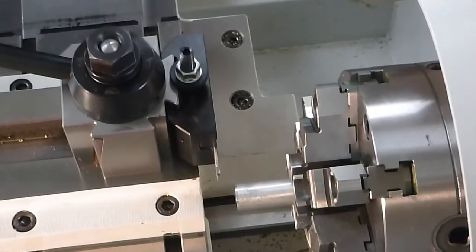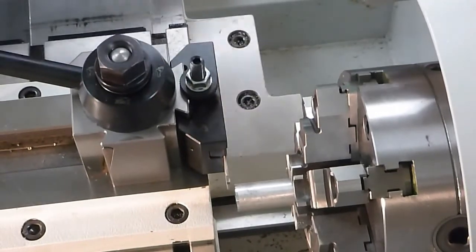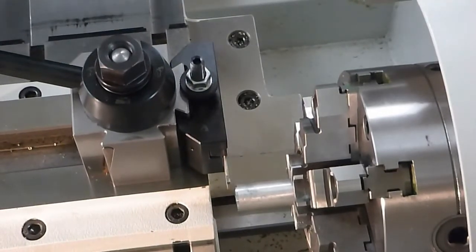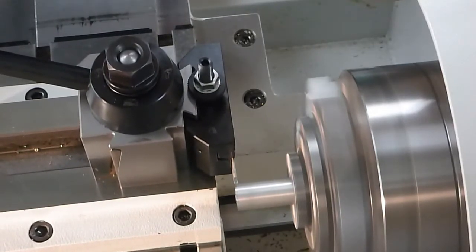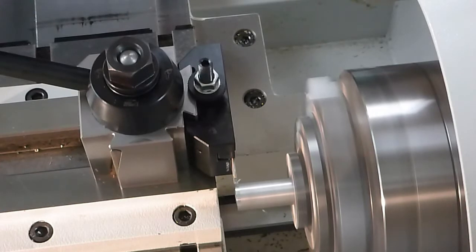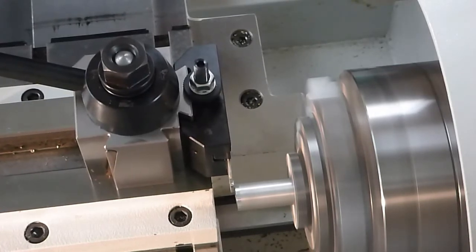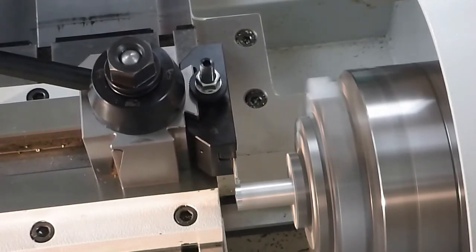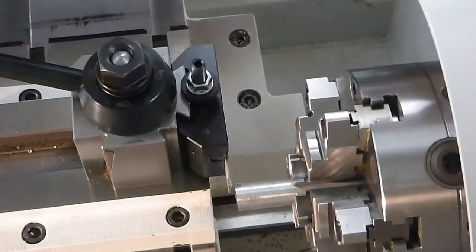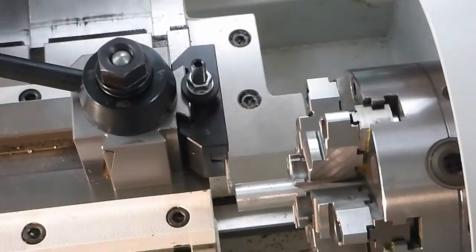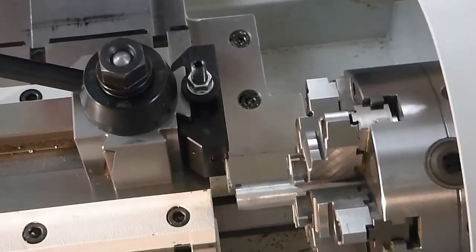So now we're going to move over and do a light cut on outside of this part to establish the z-axis. We're going to measure this diameter with the micrometer and then put that value in the controller.